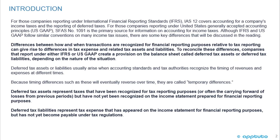Differences between how and when transactions are recognized for financial reporting purposes relative to tax reporting can give rise to differences in tax expenses and related tax assets and liabilities. To reconcile these differences, companies reporting under either IFRS or U.S. GAAP create a provision on the balance sheet called deferred tax assets or deferred tax liabilities, depending on the nature of the situation. These arise when accounting standards and tax authorities recognize the timing of revenues and expenses at different times. Because such timing differences will eventually reverse over time, they are called temporary differences.